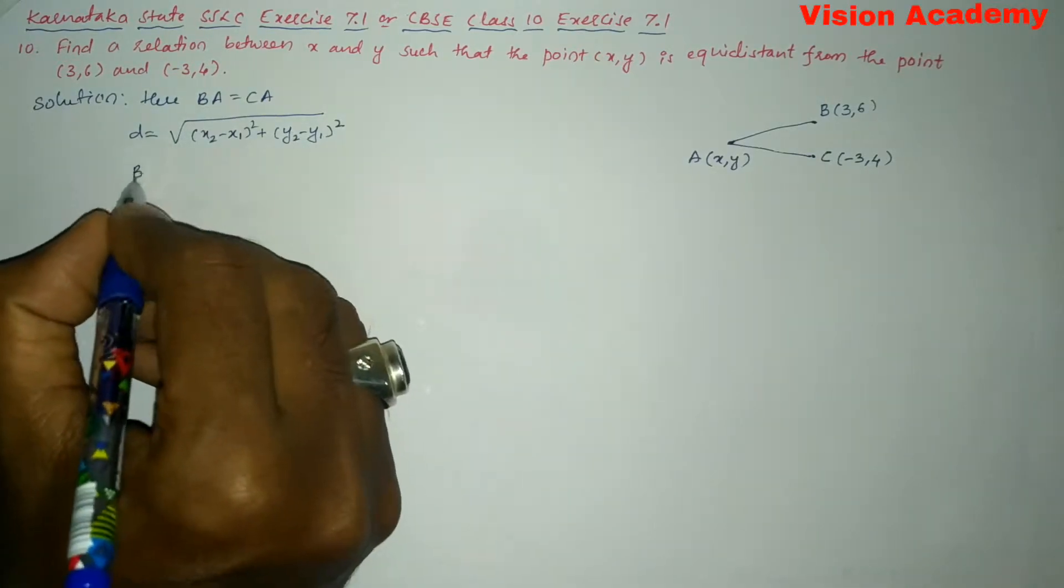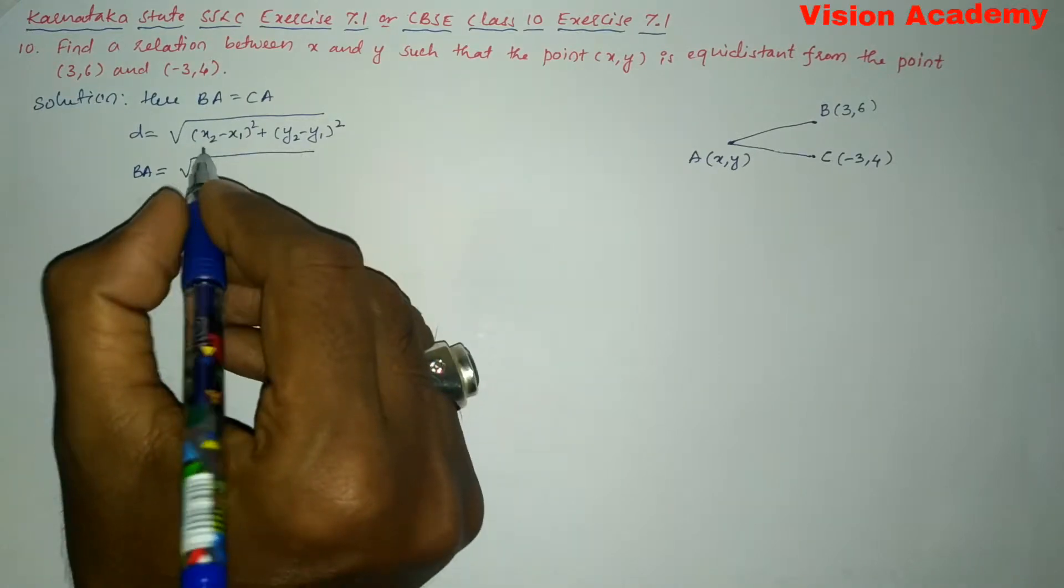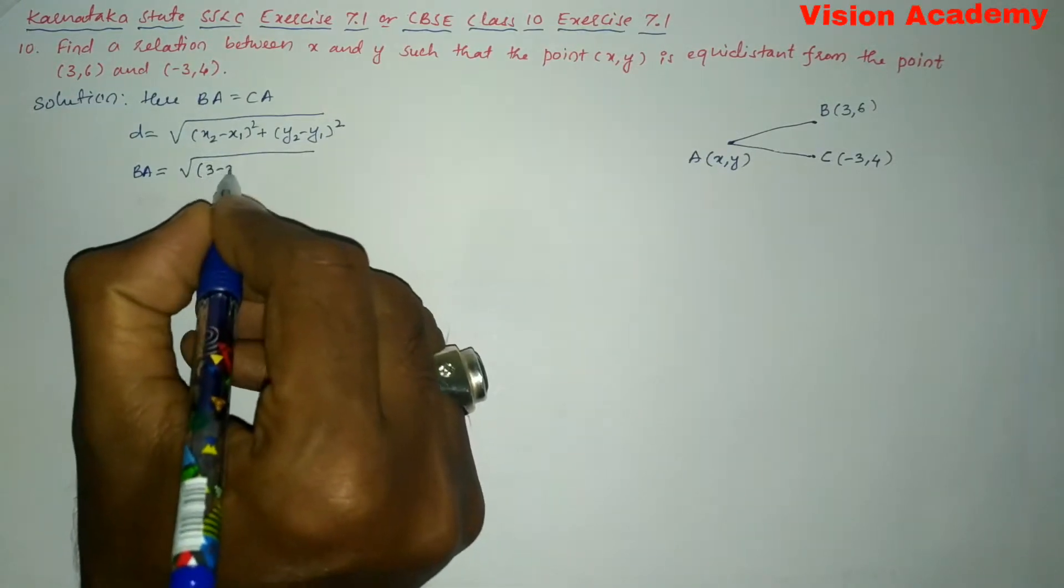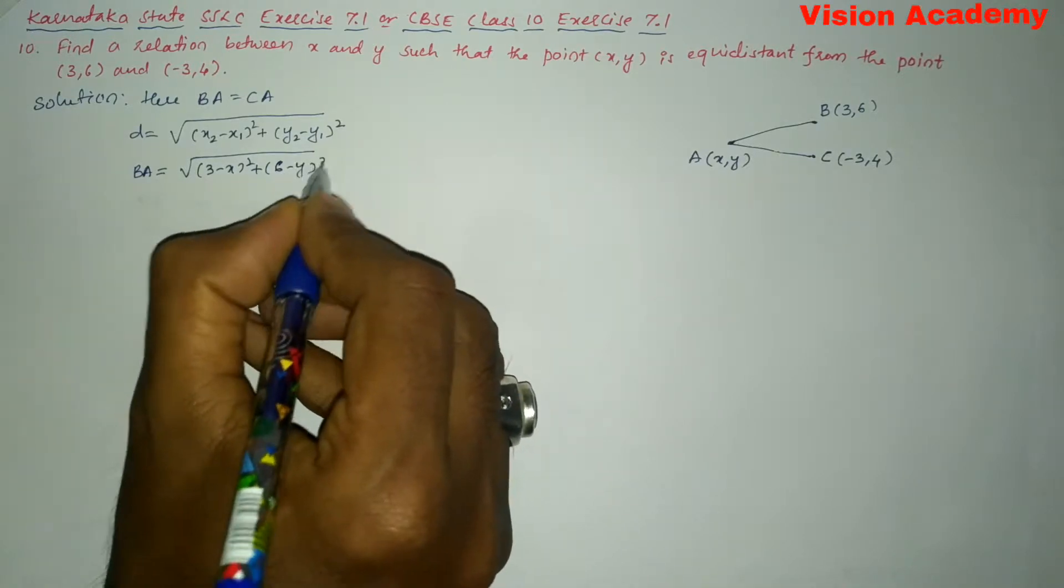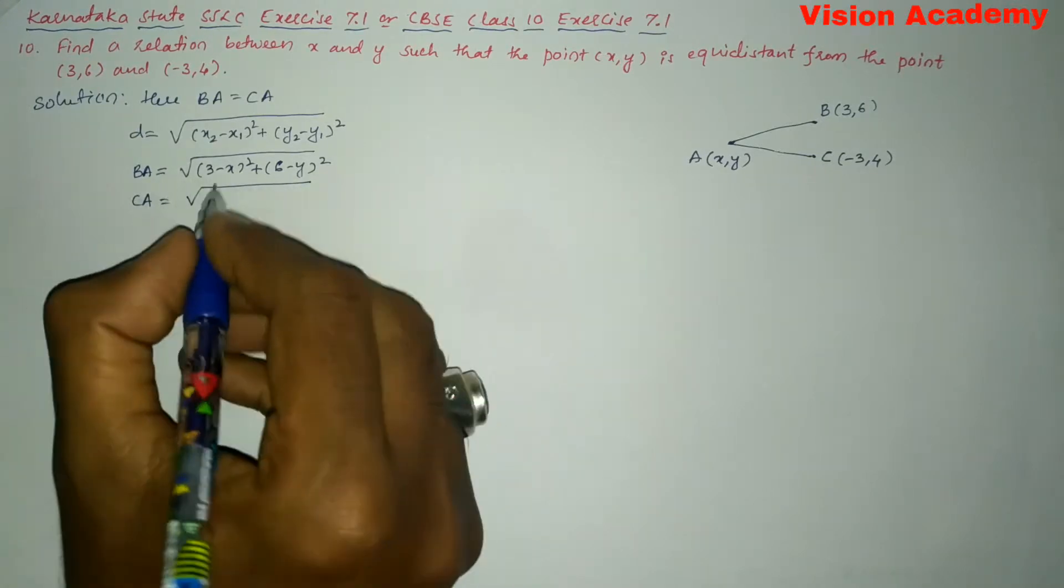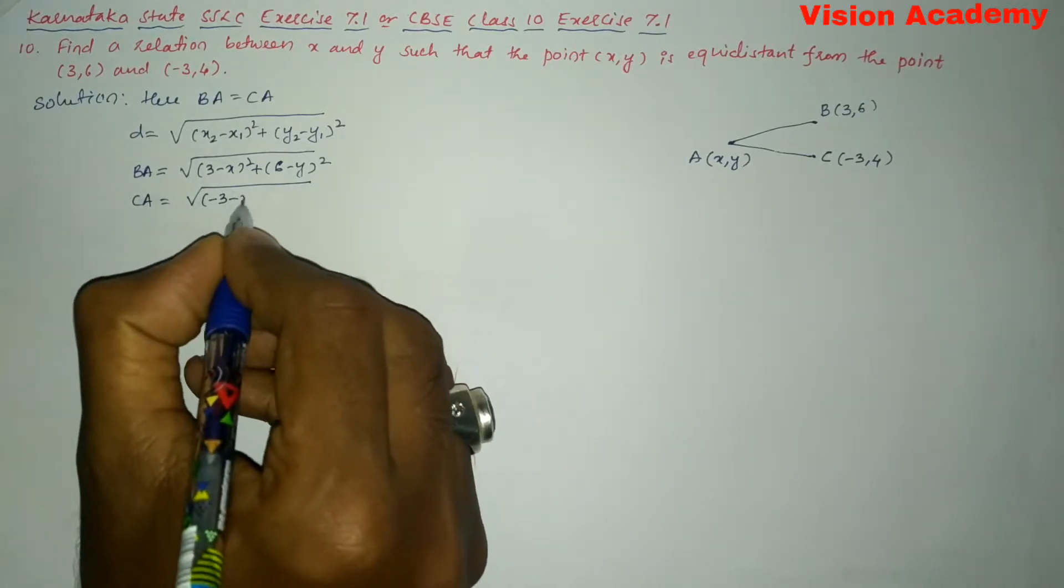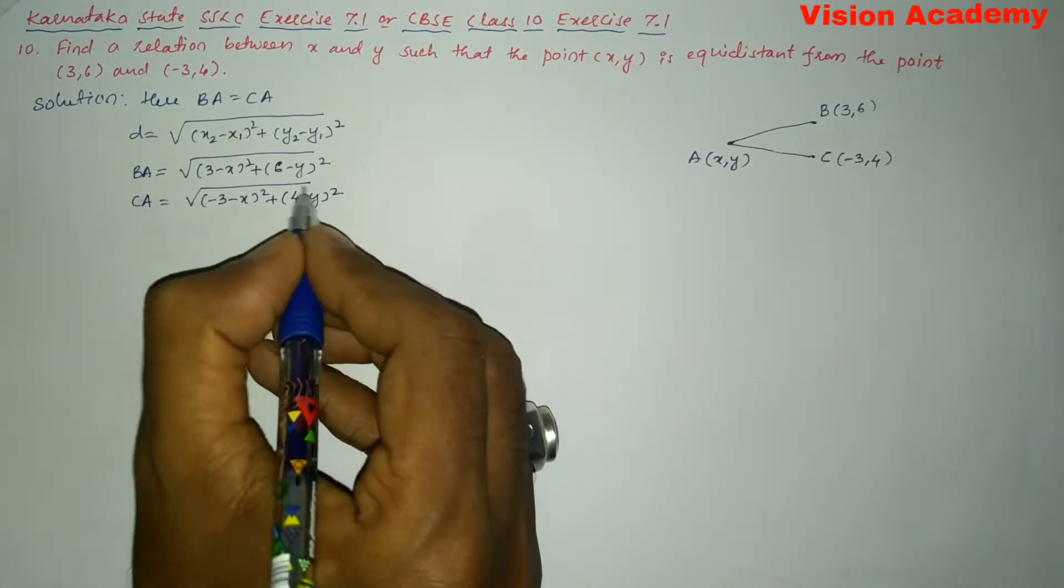So, here let us take first the side BA = √[(3 - X)² + (6 - Y)²] and the side CA = √[(-3 - X)² + (4 - Y)²].